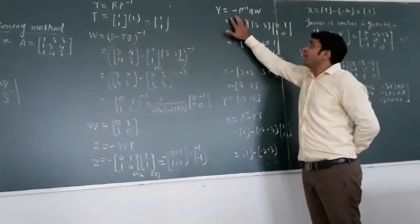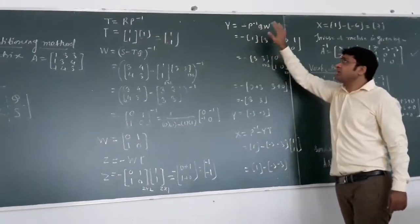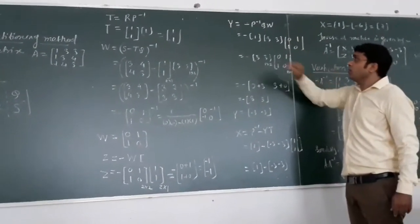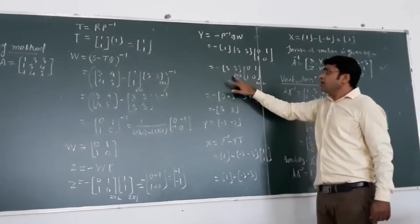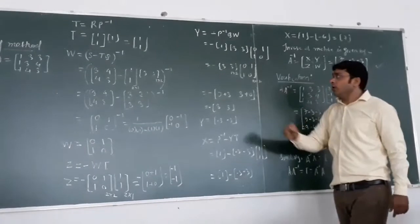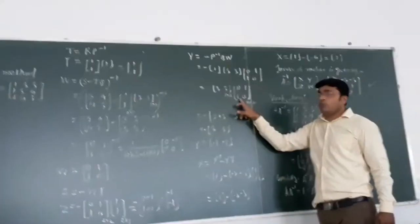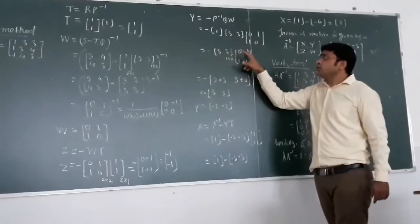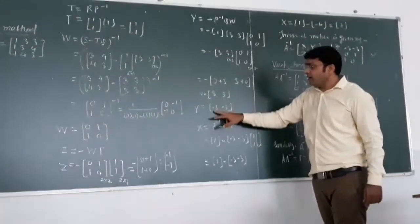Y has the formula: minus P inverse times Q times W. P inverse is 1, Q is [3, 3] of order 1 by 2, and W is [0, 1; 1, 0] of order 2 by 2, giving a matrix of order 1 by 2. Multiplying row by column: 3×0 + 3×1 = 3, then 3×1 + 3×0 = 3. Applying the minus sign gives Y = [−3, −3].